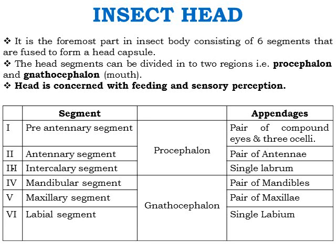The gnathocephalon of the mouth includes the mandibular segment (the fourth segment), which bears a pair of mandibles; the maxillary segment, which bears a pair of maxillae; and the labial segment, which bears a single labium. These last three segments fall under the gnathocephalon.